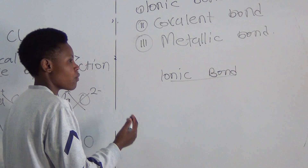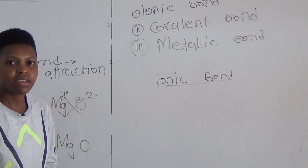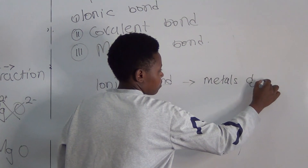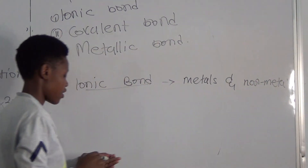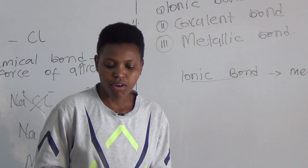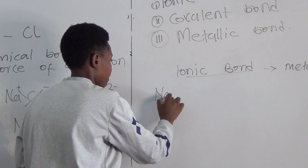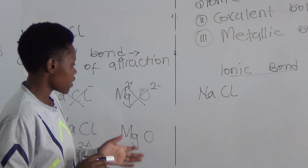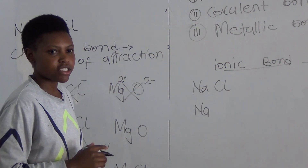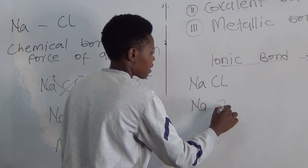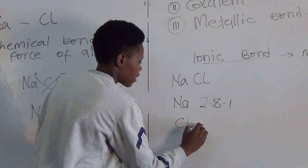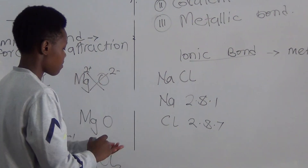In ionic bonding, one element gains an electron and the other loses — because ionic bonding is usually between metals and non-metals. We are going to show a simple example of ionic bonding in sodium chloride. We have to remind ourselves about the configuration. The configuration of sodium is 2, 8, 1. Chlorine's chemical configuration is 2, 8, 7. That means sodium has 11 electrons and chlorine has 17 electrons.